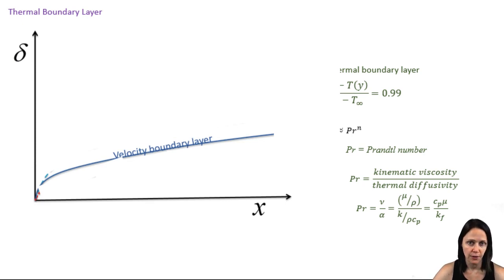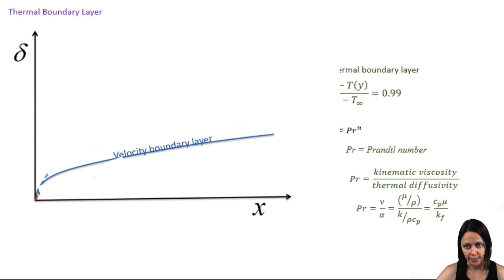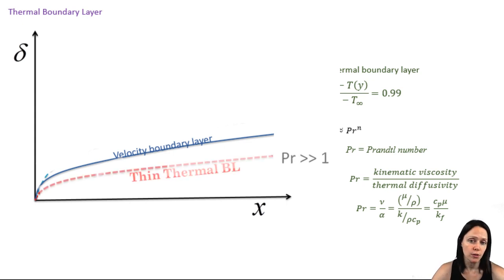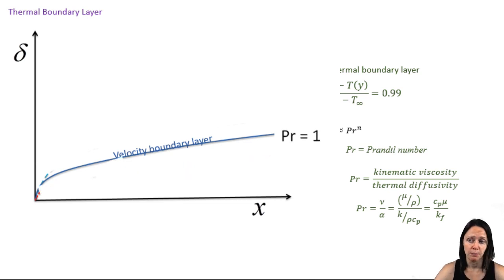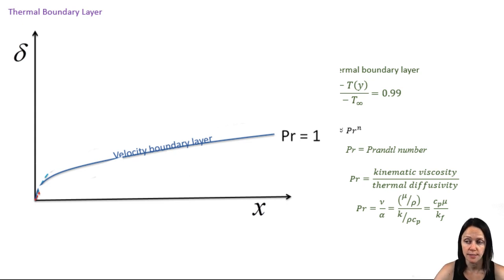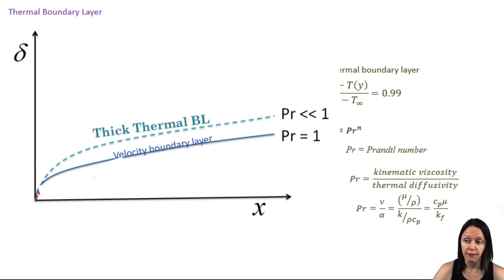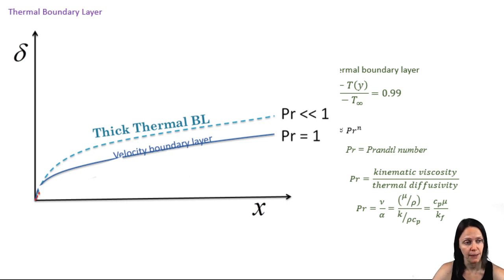Let's look at how those things are related on a graph. Here's our velocity boundary layer thickness changing as we move down the plate away from the leading edge as x increases. For oils, or things with very high viscosities, the Prandtl number is very high, so you would expect that the velocity boundary layer would be much larger than the thermal boundary layer. For gases, the Prandtl number is close to one, maybe a little less, so the boundary layers are of similar thickness. For liquid metals, which have a very high thermal conductivity, the Prandtl number is very low, so the thermal boundary layer is large in comparison to the velocity boundary layer.